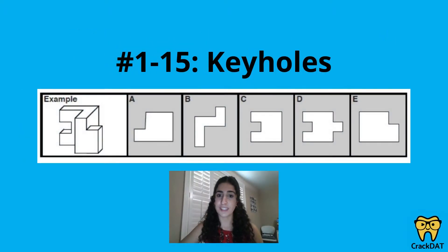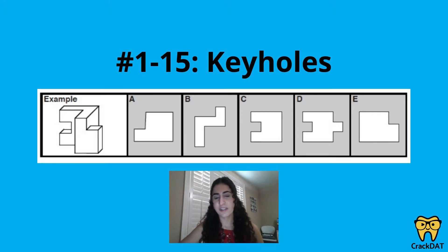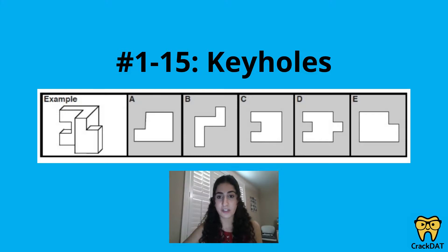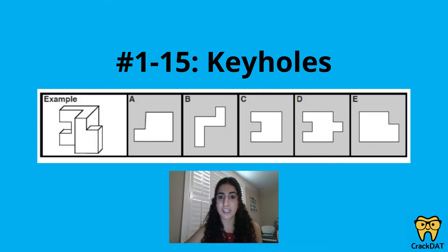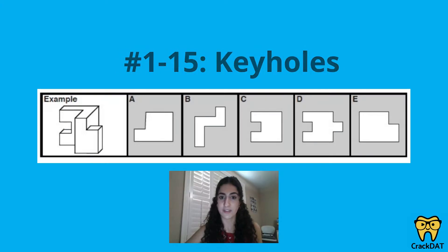Starting with keyholes, which is questions 1 through 15 of the PAT. In the keyhole section, based on images of 3D objects, it'll be your job to choose which opening would be a perfect fit for that object if that object were inserted or passed through it — much like a key is a perfect fit for the lock it's designed for.